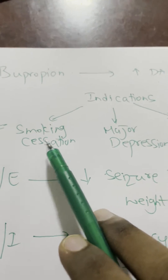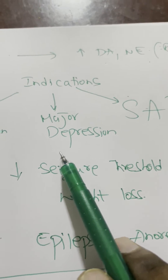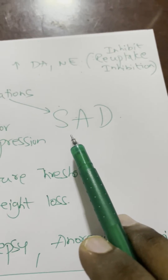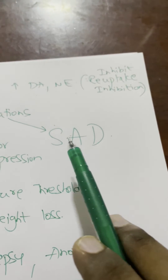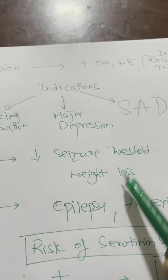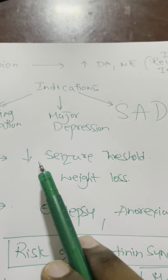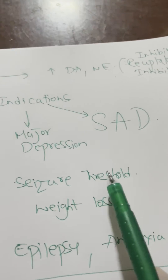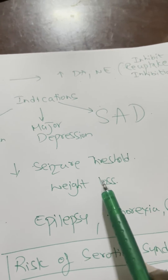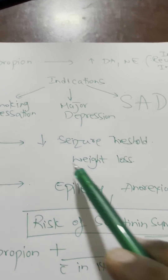The three indications are: to stop smoking, major depression, and seasonal affective disorder. What are the two important side effects? Most importantly, it decreases the seizure threshold, and it leads to weight loss.